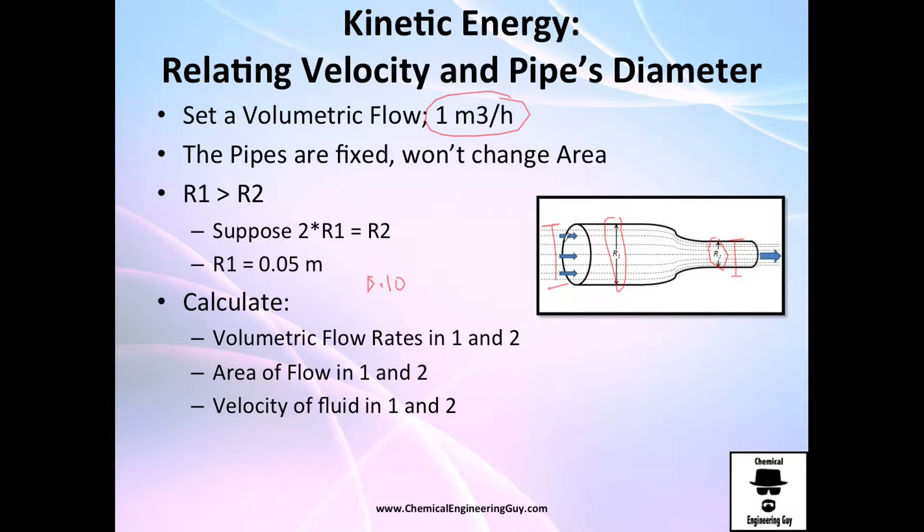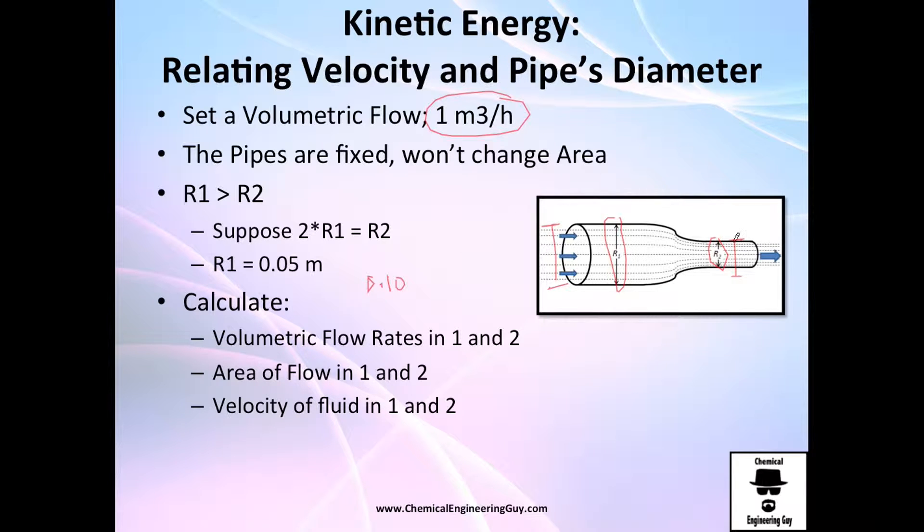Calculate volumetric flow rate in 0.1 and 0.2. Calculate area in 0.1 and 0.2. And calculate velocity of fluid in 0.1 and 0.2. So recall that from mass balance, the mass flow is constant. So inlet equals outlet. Mass 1 equals mass flow 2.